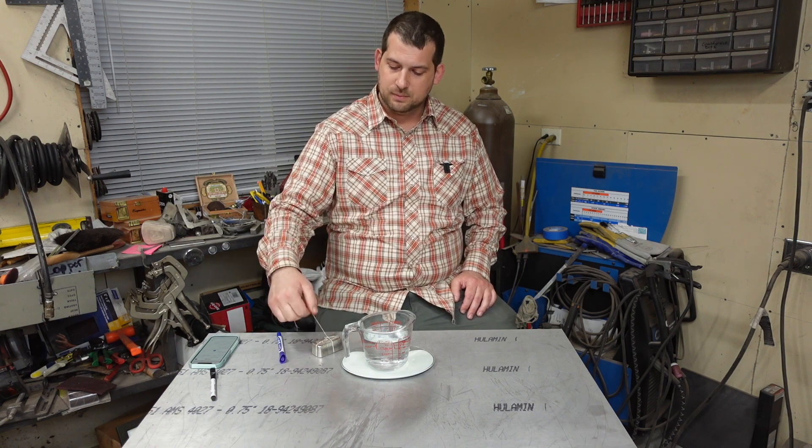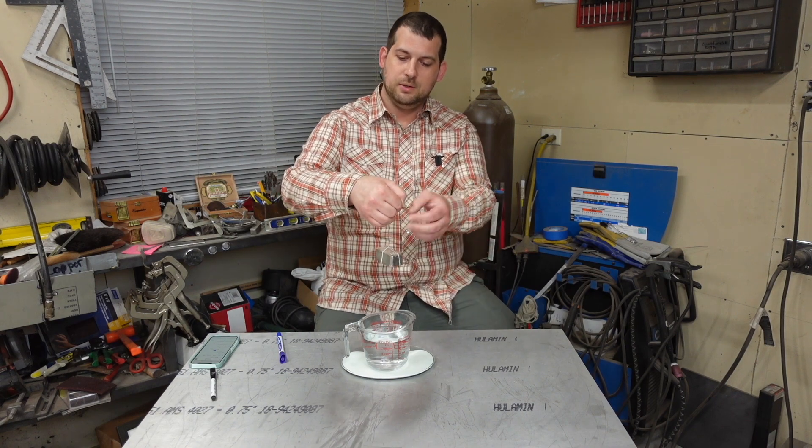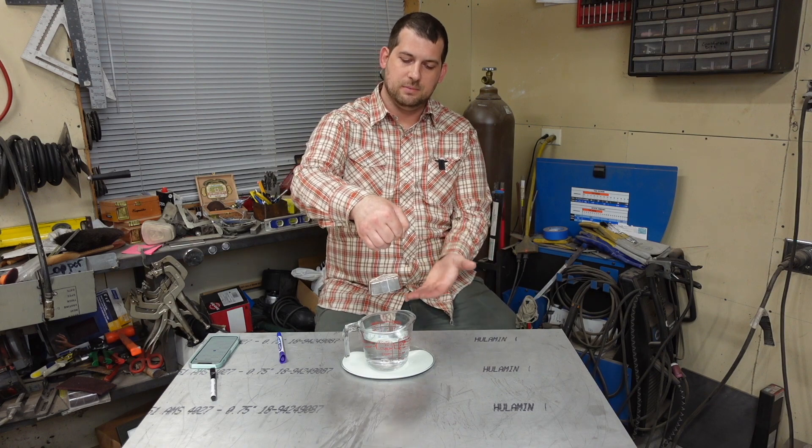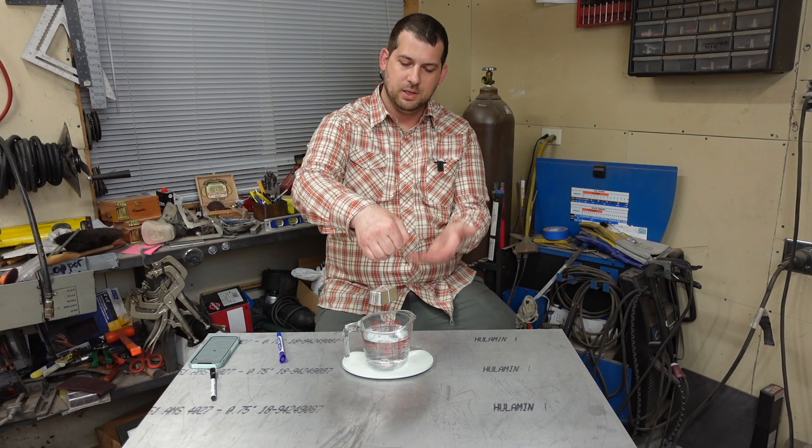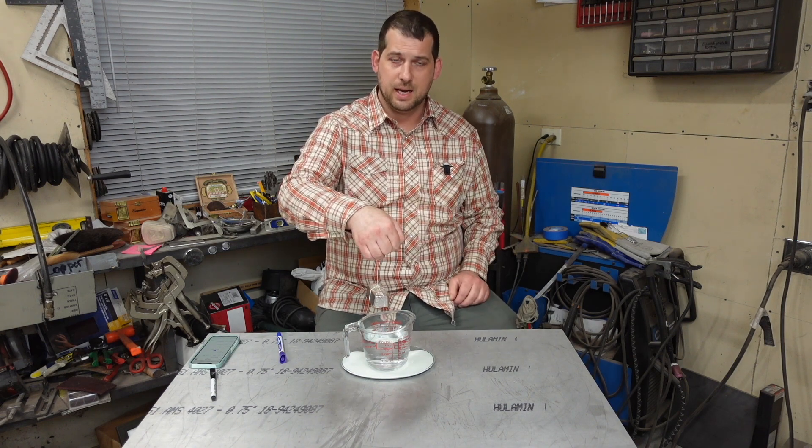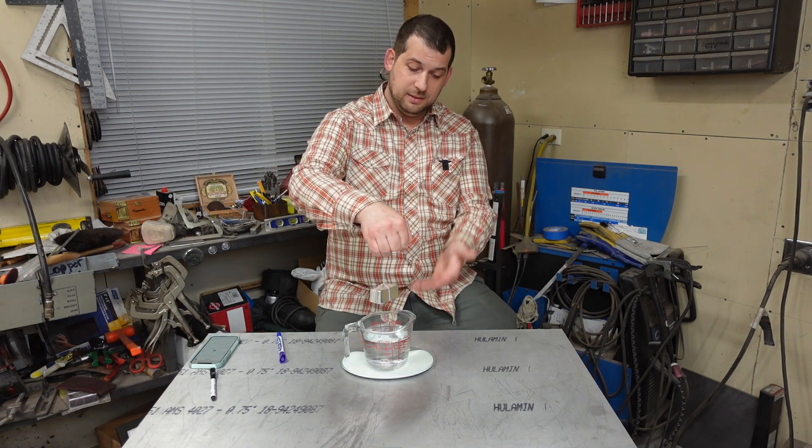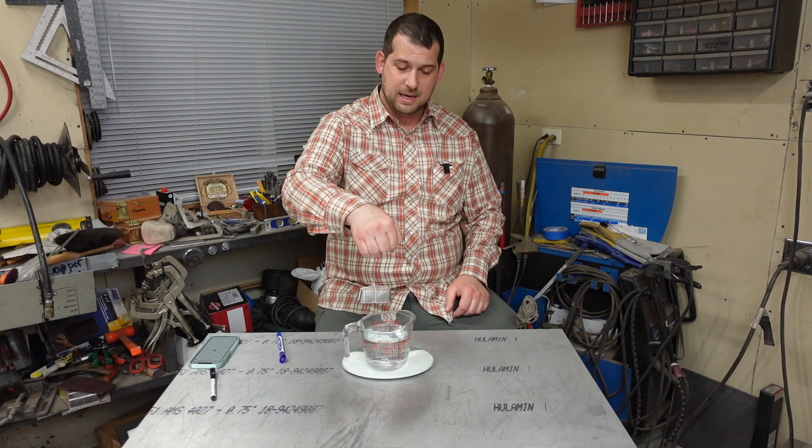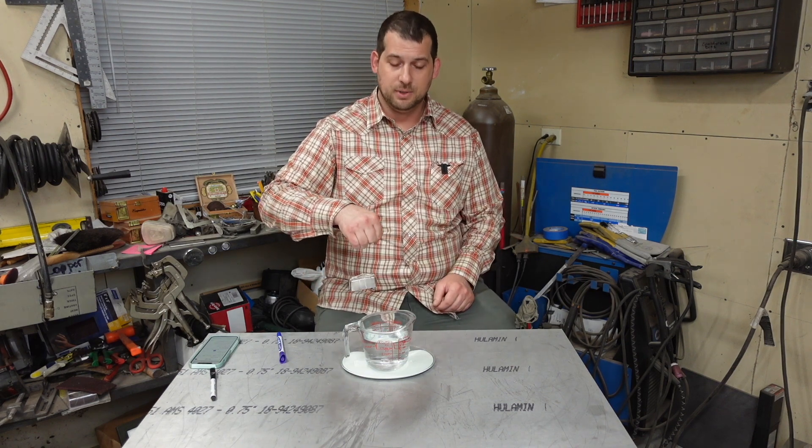So now you could use like a fishing type scale and measure the buoyancy force, and it would be the difference between the weight and what it says on the scale. But our other good buddy Sir Isaac Newton told us every force has an equal and opposite reaction, so we can actually measure the force from down below.